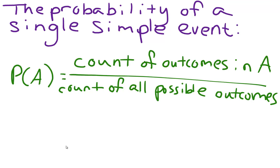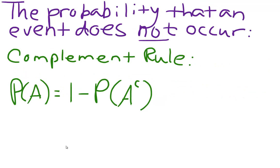When working with probability, you'll also need to know some basic formulas. The probability of a single, simple event is given by: the probability of A equals the count of outcomes in A divided by the count of all possible outcomes. The probability that an event does not occur is called the complement rule, given by the formula: the probability of A equals 1 minus the probability of A's complement.